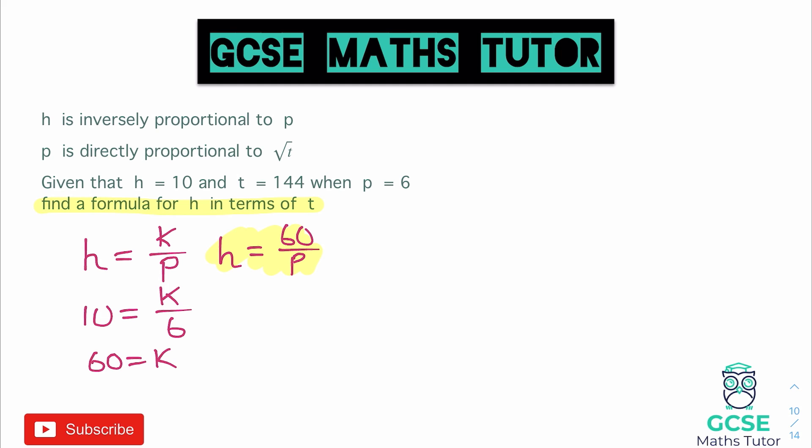So for the direct proportion question, we have p is directly proportional to the square root of t. So p equals k root t. So no fraction in that one. Now let's substitute our values in. So p is 6. So 6 is equal to k root 144.